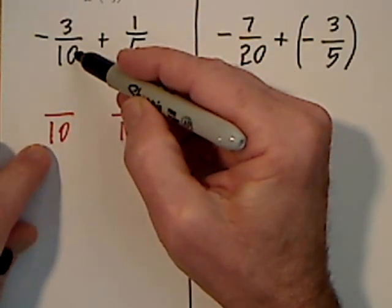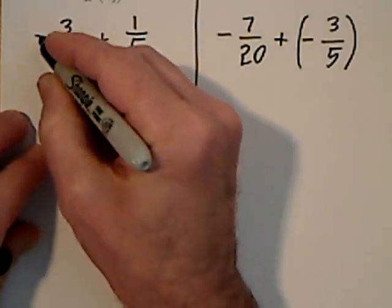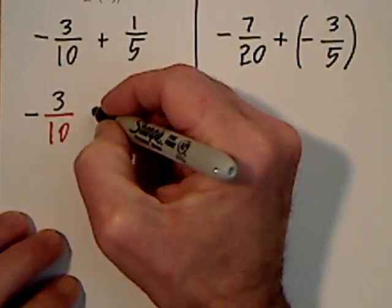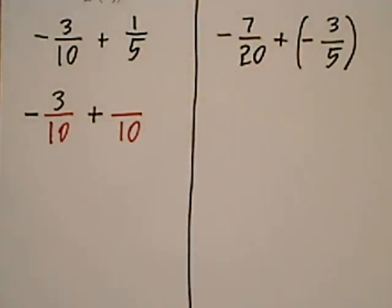This denominator is already a ten, so I didn't change anything. I just bring down the three and the negative sign. This positive sign can come down. I changed from five to ten.